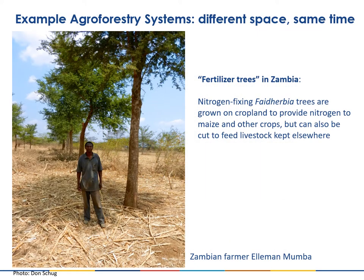This is an example of a system that occupies different spaces but the interactions between species occur in real time. Farmers in Zambia are planting nitrogen-fixing Faidherbia trees on cropland while simultaneously growing maize crops underneath the trees. However, they can also cut branches of this tree to carry and feed to livestock kept elsewhere. The trees also produce protein-rich pods which are nutritious for cattle and other livestock. So this is also an example of a system integrated in time but occupying different space.